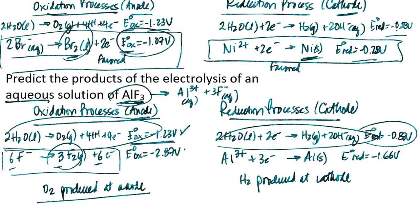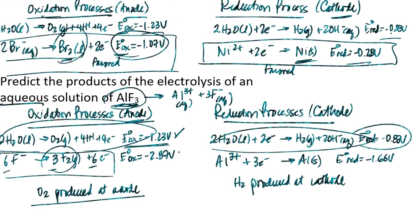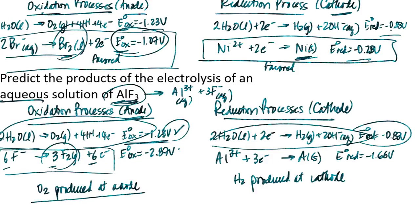Also, a warning: sometimes these reduction potentials aren't necessarily the most reliable indicators of what may happen. There's a phenomenon known as overvoltage that may actually affect these patterns. For now, the questions we'll be dealing with center on the reduction potentials as indicators of what would happen in electrolytic cells, but be aware that in practice it doesn't always work out exactly as the reduction potentials would indicate.